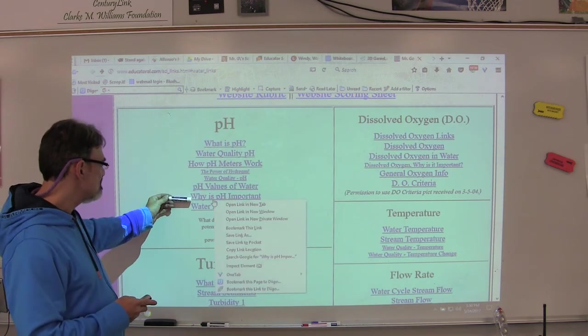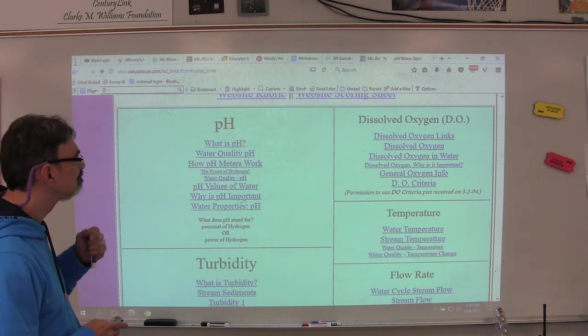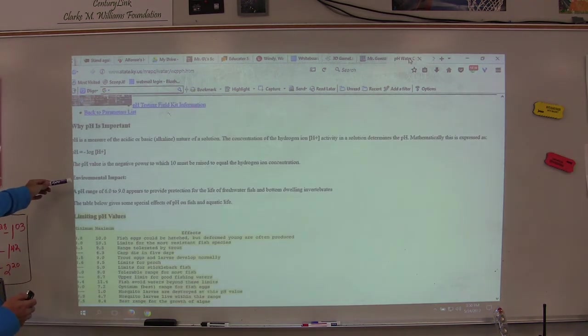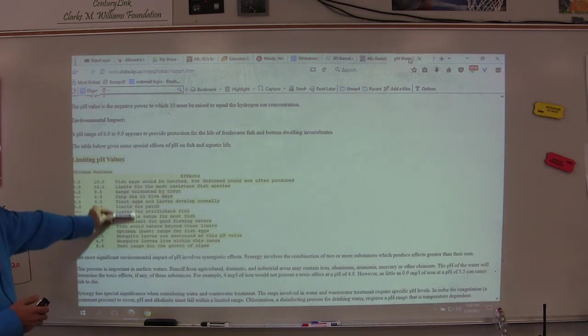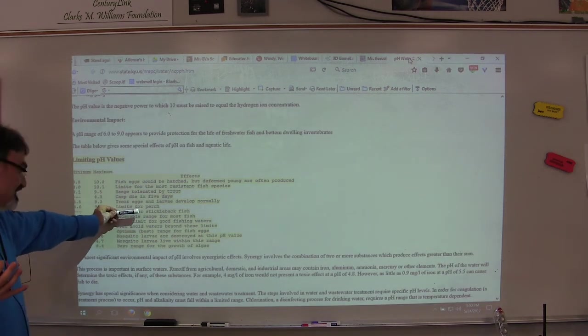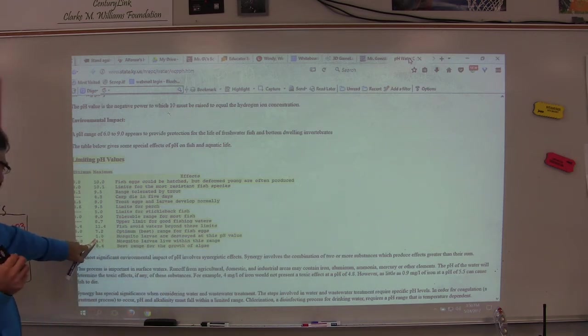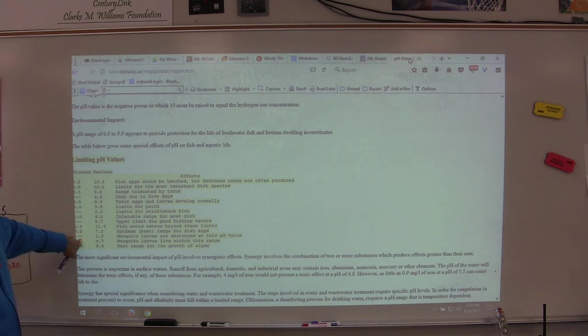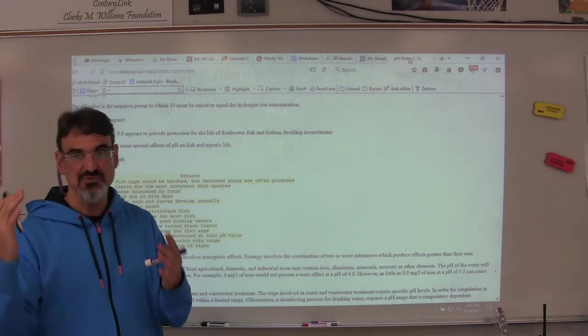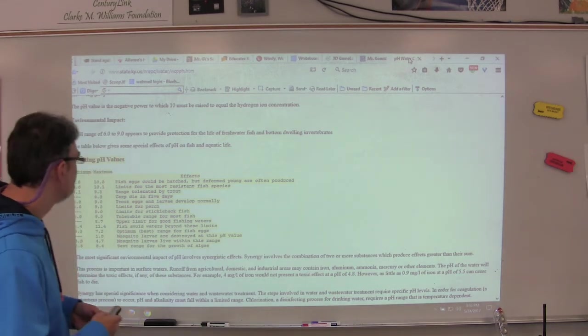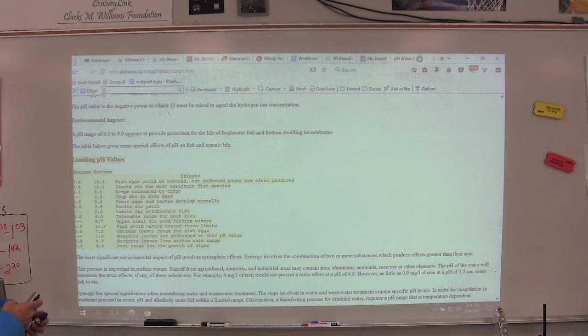And then why pH is important. I want to point this one out because it has more examples of what pH levels affect fish and in what ways. Oh look, mosquito larvae are destroyed at a pH value of maximum 1, and there is no minimum. That's good because the benthic macroinvertebrates we know are very important for the salmon, and they tell us if the stream is polluted. So that's a good one for you to have.